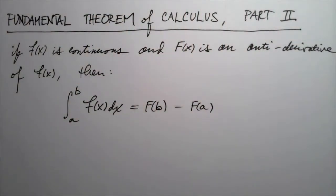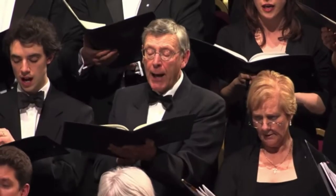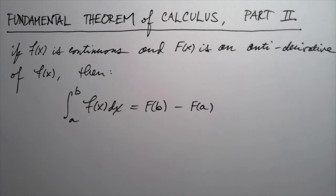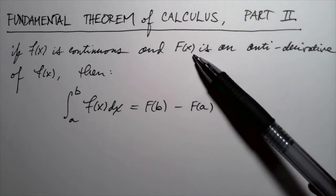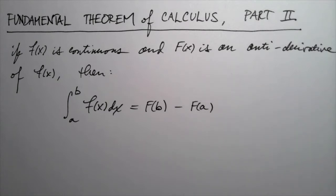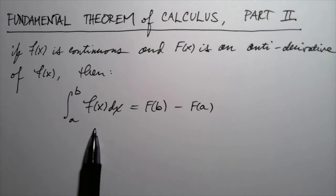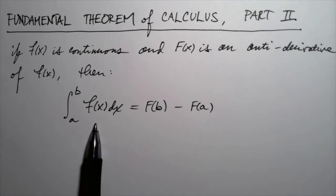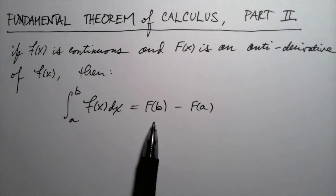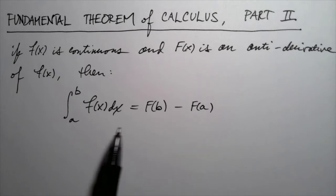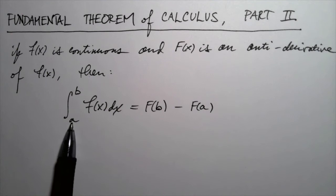We're now ready for the Fundamental Theorem of Calculus, Part 2. This says that if f of x is a continuous function, and capital F of x is an antiderivative of that function, then we can compute the integral of f in terms of the antiderivative. The integral of the original function — the area under the curve between a and b — is given by F of b minus F of a. Notice that the order that a and b sit on the integral sign determines the order of that subtraction.